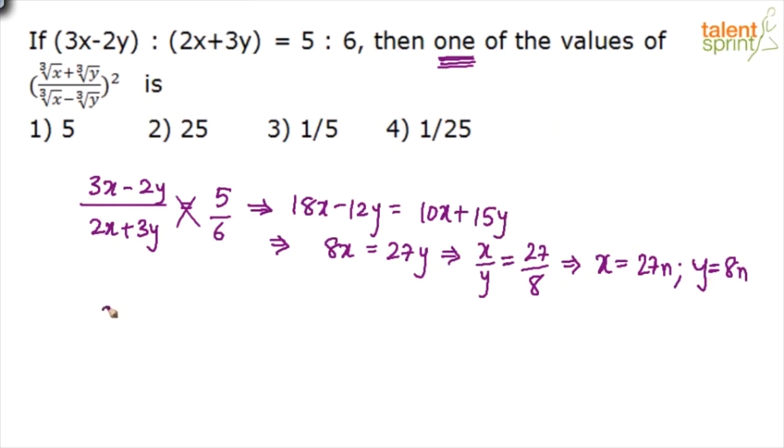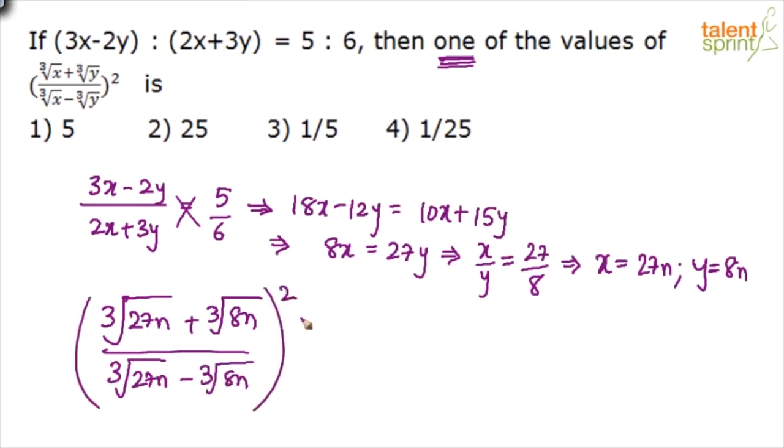So substitute this now: cube root of x, what is x here? 27n, plus cube root of y, what is y? 8n, upon again cube root of 27n minus cube root of 8n, whole squared.